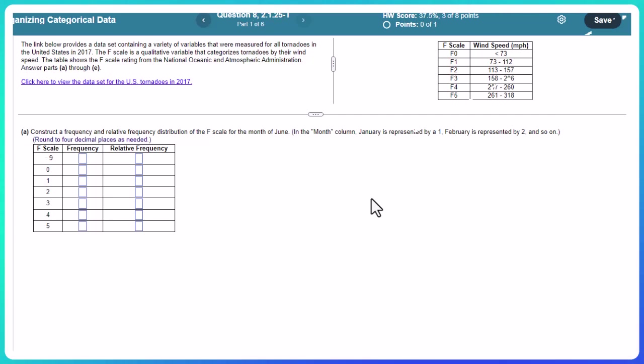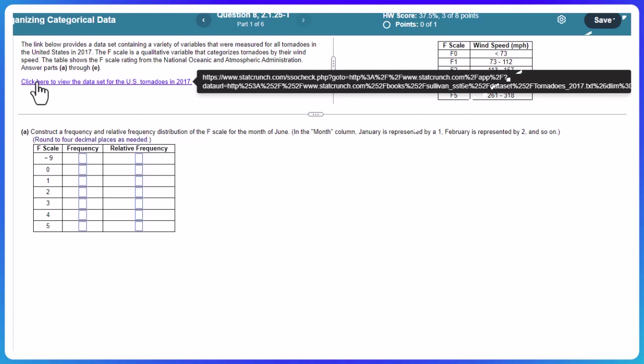The link below provides a data set containing a variety of variables that were measured for all tornadoes in the U.S. in 2017. The F scale is the qualitative variable that categorizes tornadoes by their wind speed. The table shows an F scale rating from the National Oceanic and Atmospheric Administration, answer parts A through E. So first, let's take a look at this F scale. We've got F0 all the way to F5. We can click on this button here.